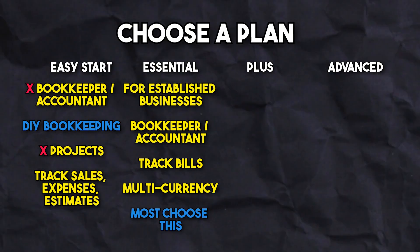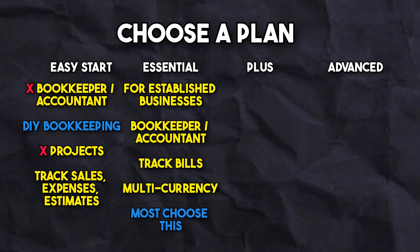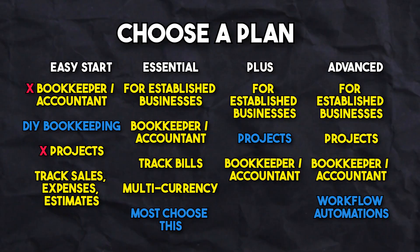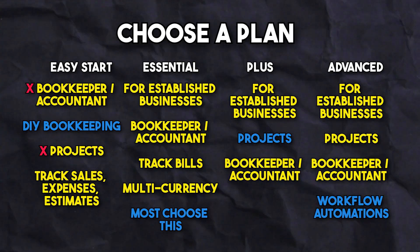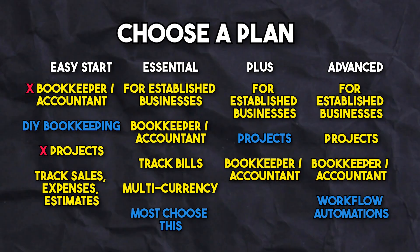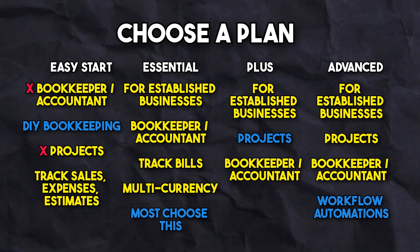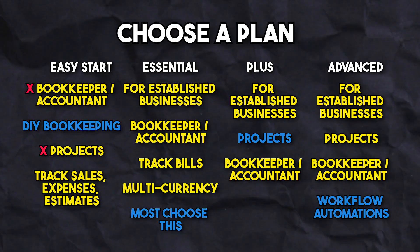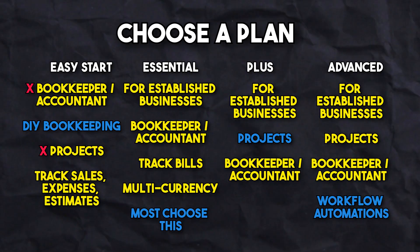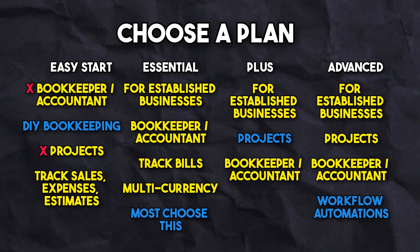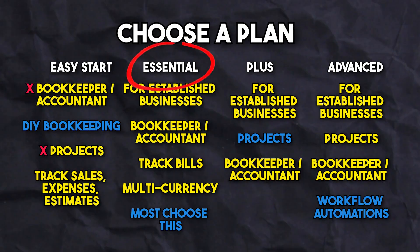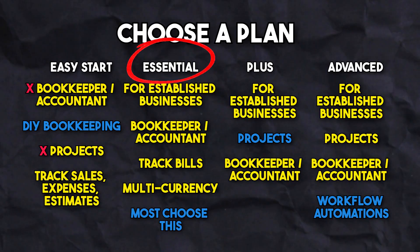If you're working on your cleaning business full-time and managing projects is a core part of your business, then the Plus or Advanced plans may be the best option for you. Both of these plans have the ability to track individual projects, inventories, and also create and manage budgets for your cleaning business. The only major difference between the Plus and Advanced plan is that the Advanced plan allows for a little bit more automation with the QuickBooks software. We generally start most cleaning businesses with the Essential plan, and as their business grows, they may choose to upgrade their plan as needed.